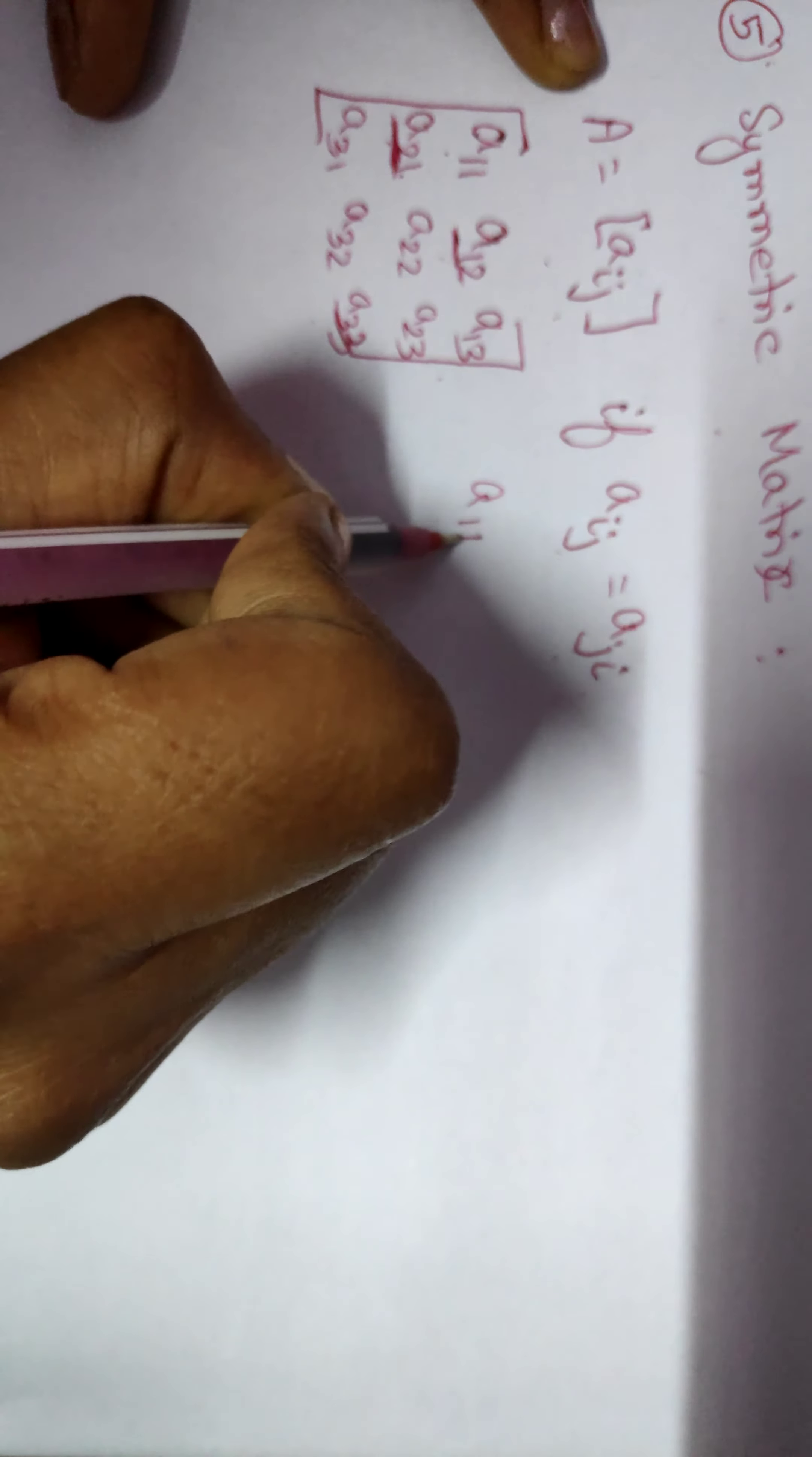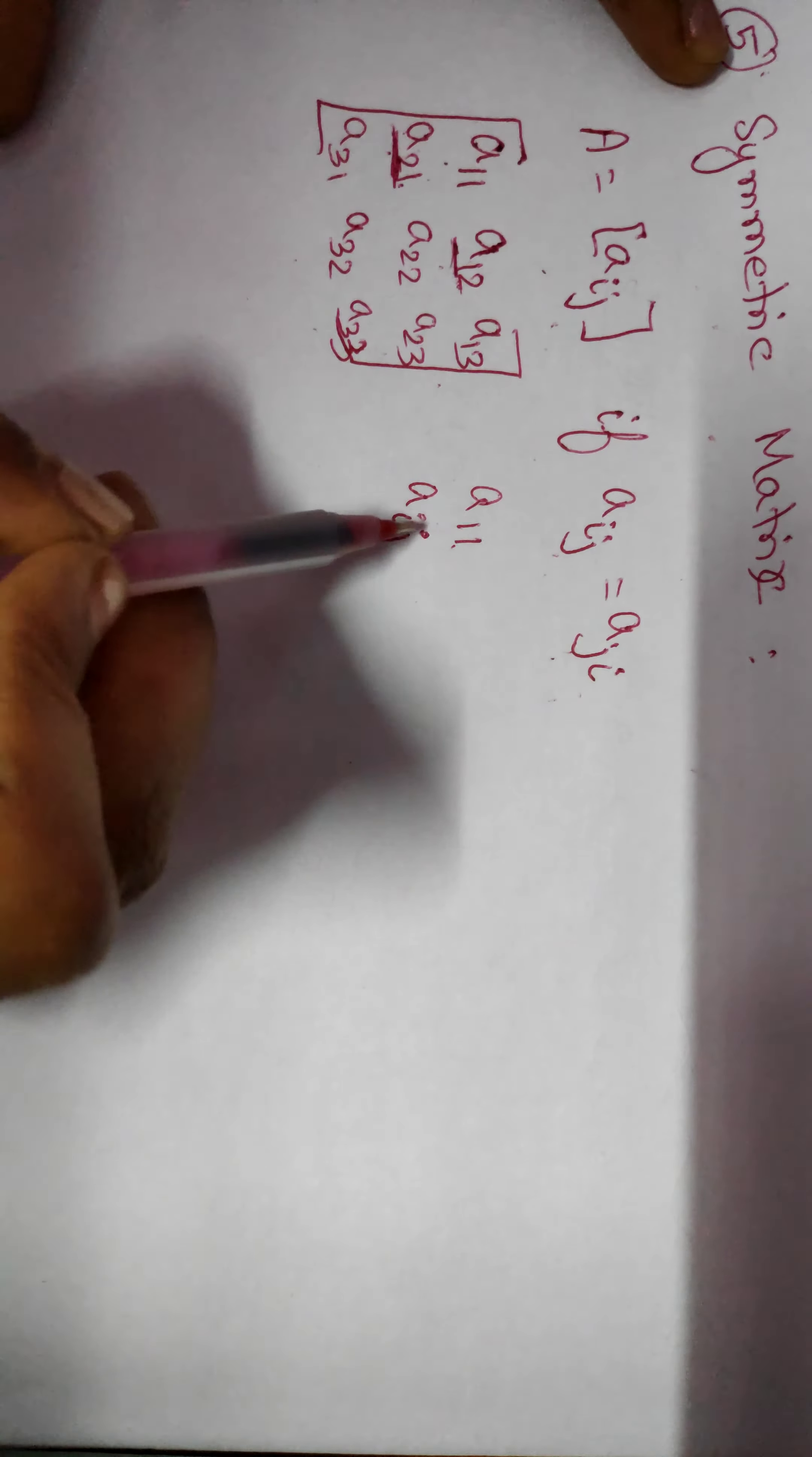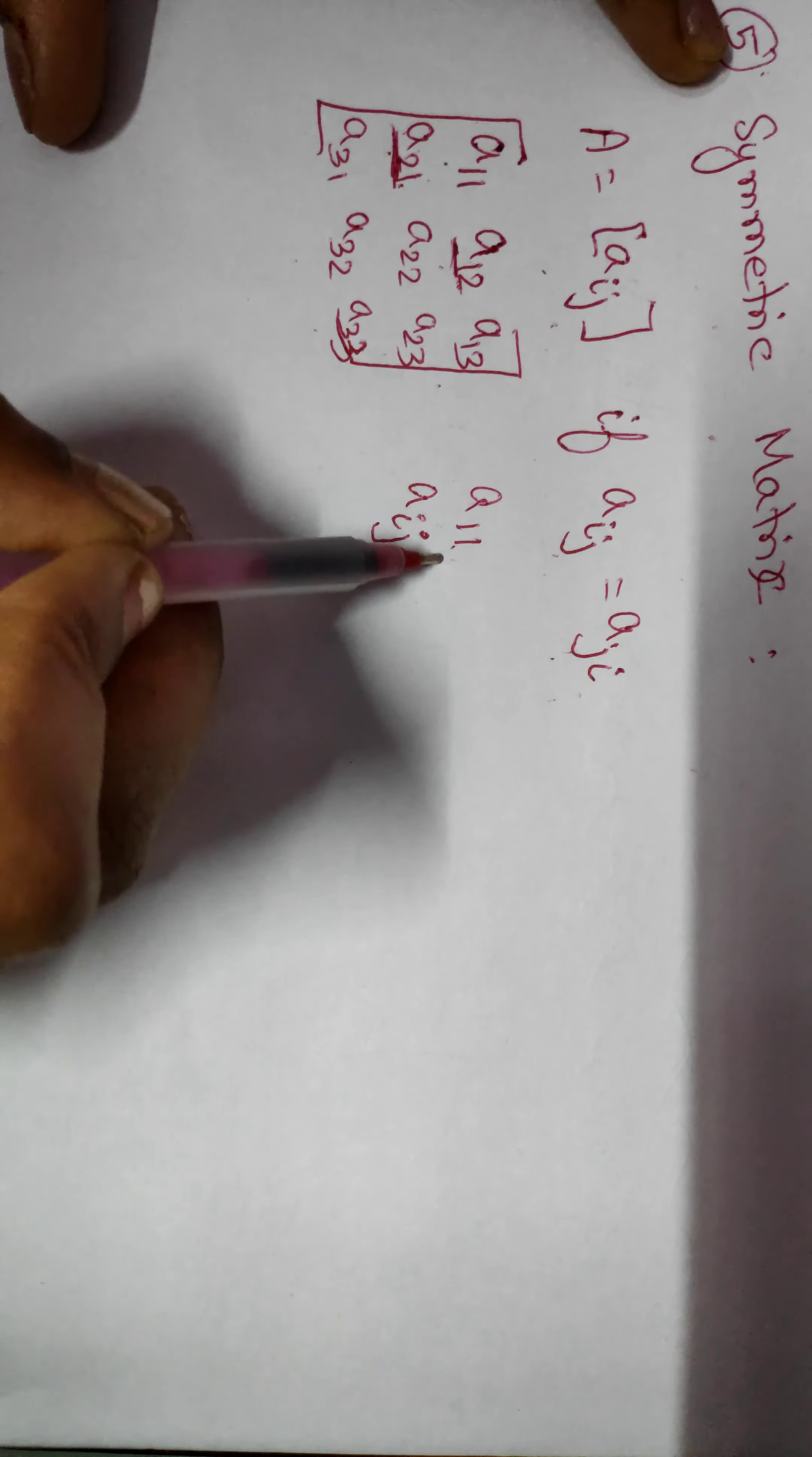This A11, what it indicates? Aij - this i value is 1, j value is 1. It is nothing but the number of rows and columns.